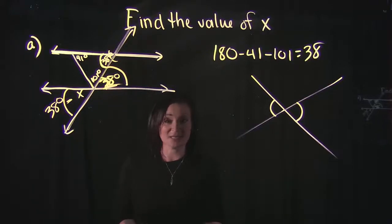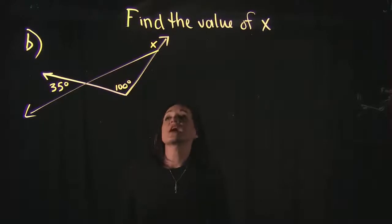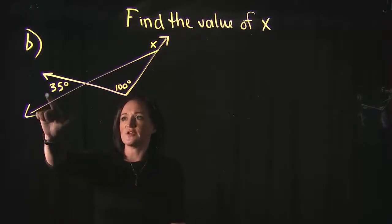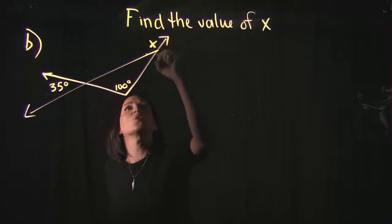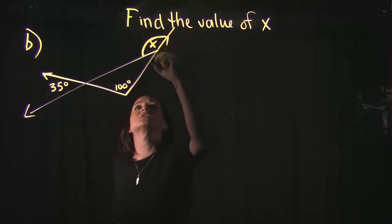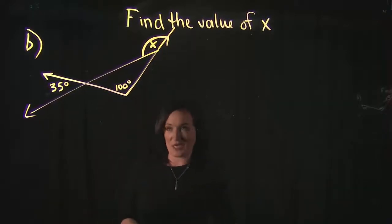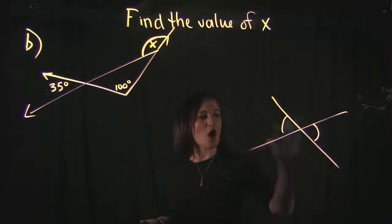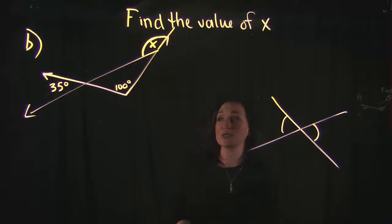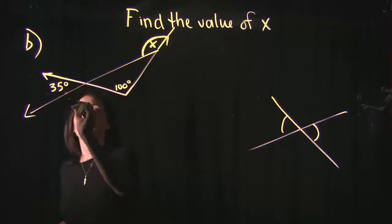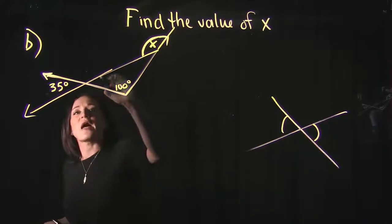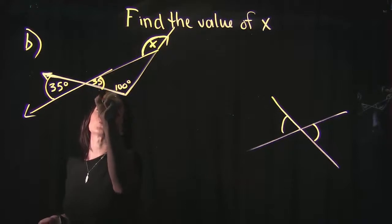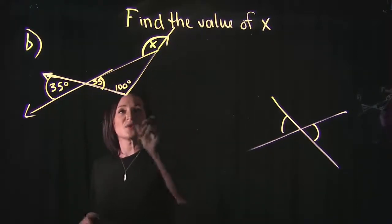Moving on to the next example: we're told one angle is 35 degrees and another is 100 degrees, and we need to find angle X. First, I'll use vertical angles. Looking at the two intersecting lines, this angle and the 35-degree angle are vertical angles, so they are congruent. That means this angle also equals 35 degrees.